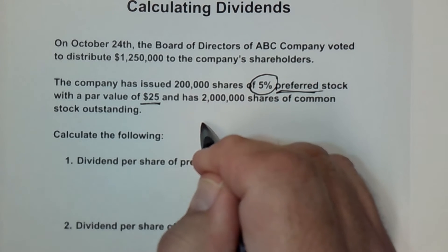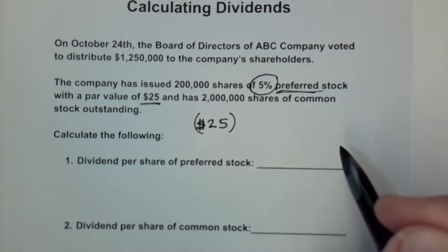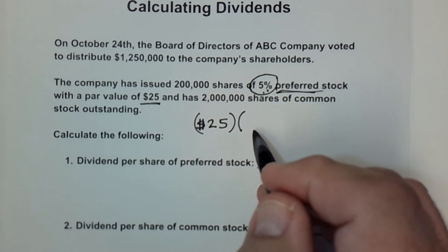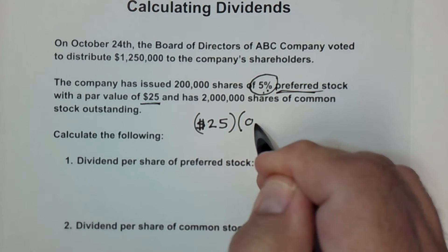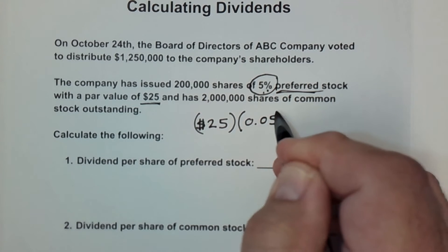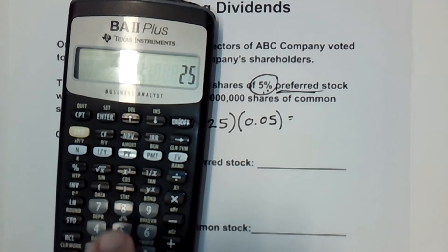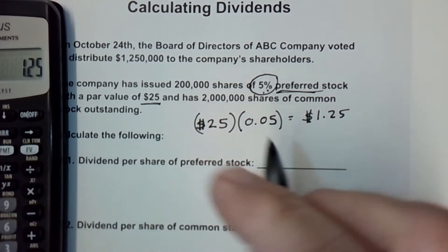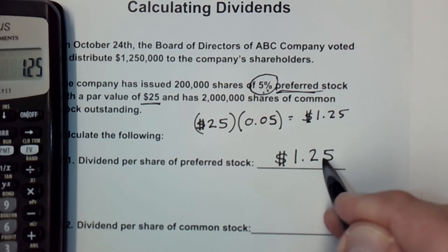To calculate the preferred dividend per share, I start with the par value of $25 and multiply it by 5%. When multiplying, I convert the percent to a decimal — so 5% becomes 0.05. So $25 multiplied by 0.05 gives us $1.25. That means $1.25 per share is the dividend for the preferred stock. That's the answer to the first part.